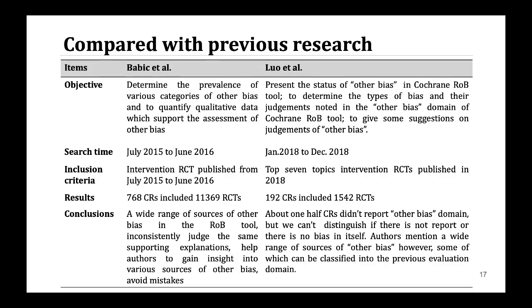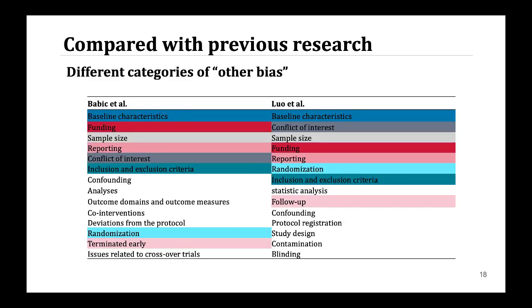We compared our research with the previous research by Babico from the following aspects, and found that our research conclusions are basically consistent with that study. The top six bias types are basically the same between the two studies, but in 2018 Other Bias reporting showed no progress. There are still many Other Bias items that could be divided into previous domains.